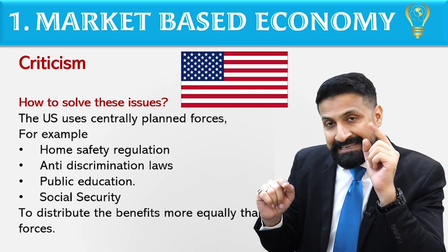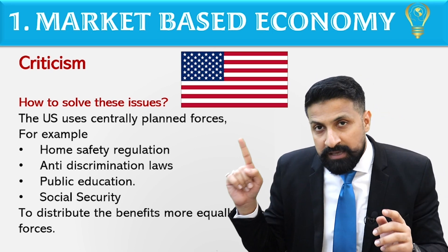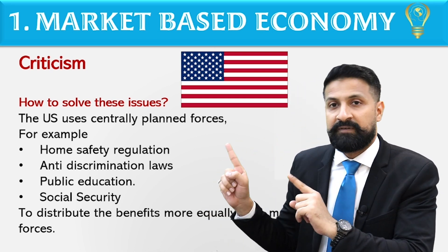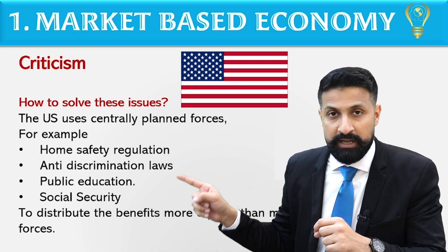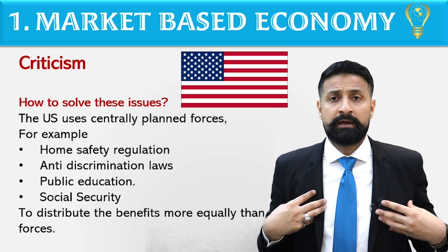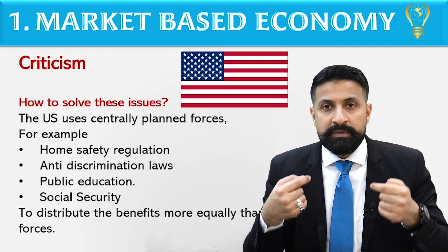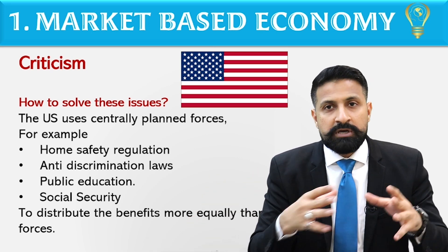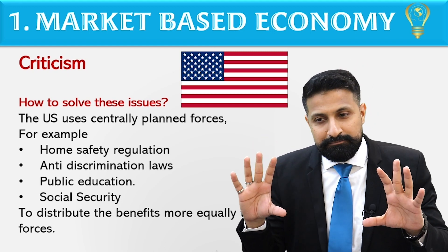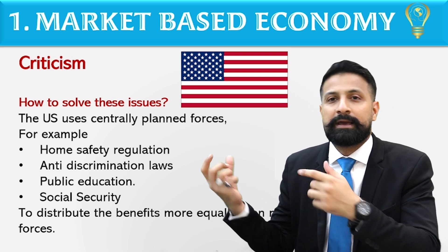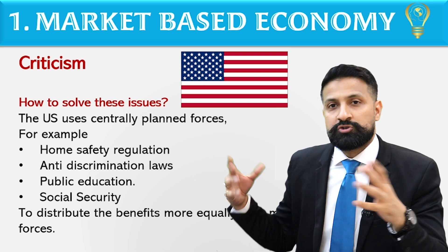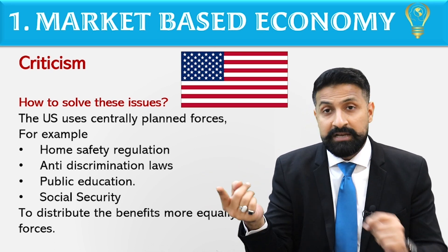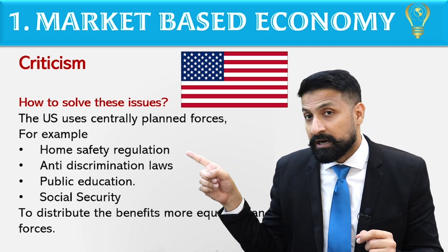Public education — what education to give the public, how to give it, what the quality should be — all of this is in the state's hands. The question of whether it's free or paid is secondary; the requirement to provide it is non-negotiable. In Canada, if someone dies, they don't worry about their child's education — the government takes responsibility until the child graduates and gets a job. Social security and safety nets — the government has taken all these things into its own hands so that there is no market exploitation of the public.